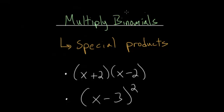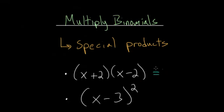For this video, I'd like to continue our discussion about multiplying binomials, but this time I'd like to focus specifically on these two special products. This first one is called a difference of squares, or a difference of two squares, and you'll see why it's called that shortly. The second one is a perfect square of a binomial. These two situations arise often, so it's worth taking a closer look at their special features.